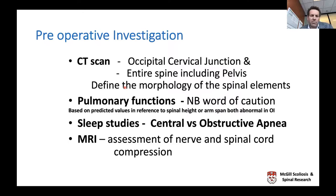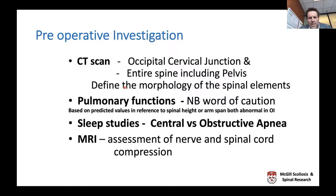Sequential pulmonary function tests are mandatory, but one must be well-versed in interpreting them in these children. Pulmonary functions are normally compared using the child's height or arm span—both significantly shortened in OI. So you may get pulmonary function values 120% of expected, not because lungs function better, but because the reference values are distorted. It's the sequential trend you're looking for, not absolute values. Some children appear to have normal pulmonary function on paper while actually getting into respiratory trouble.